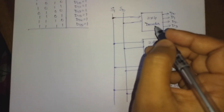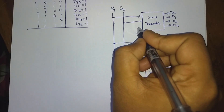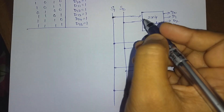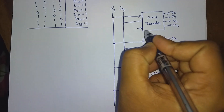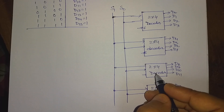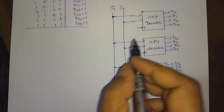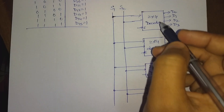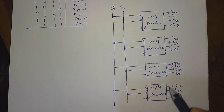In a 2x4 decoder we have another input line, that means this is the enable input line. So we have to use this enable input line so that we can design a 4x16 decoder. These are the enable line ports. We have to use this enable line so that whenever any one of the decoders is working, the others will be off.